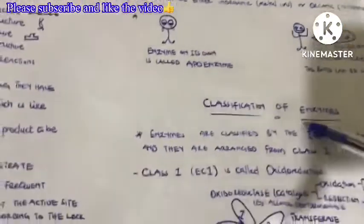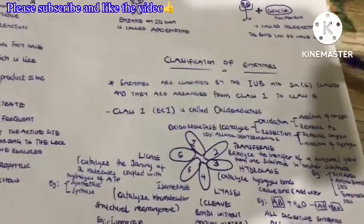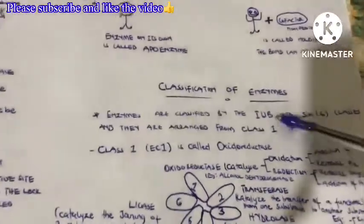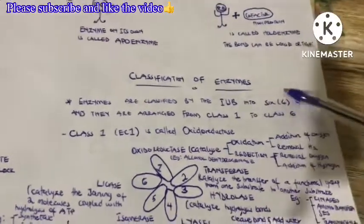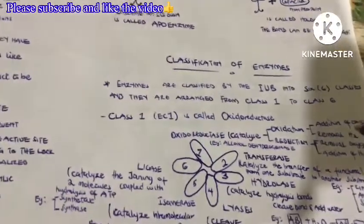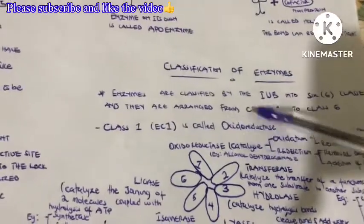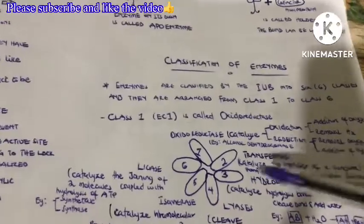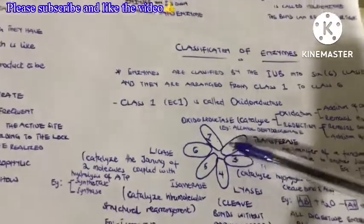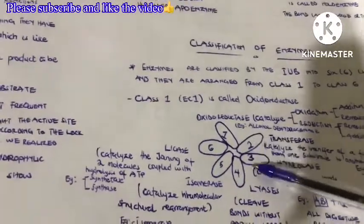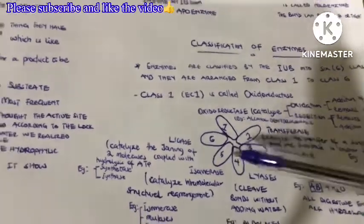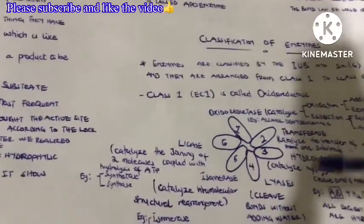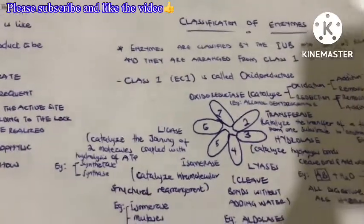Now let's look at the classification of enzymes. Enzymes are classified by international units of biochemistry into six classes, arranged from class one to class six. In 2018, they actually introduced a seventh class called translocase. But now we will look at the six classes.